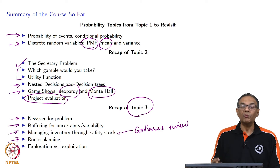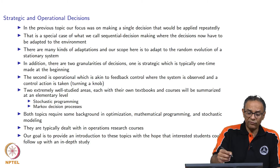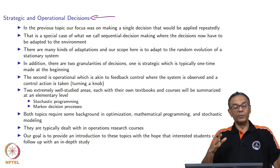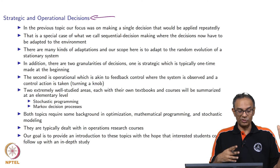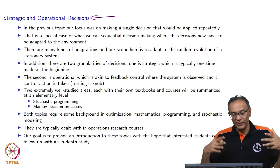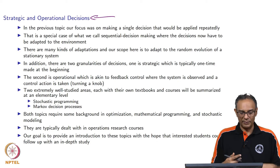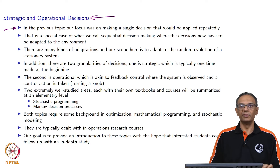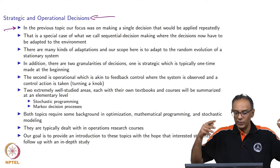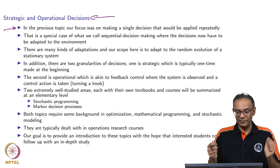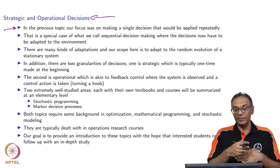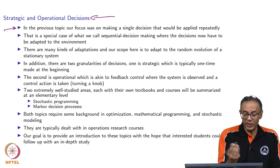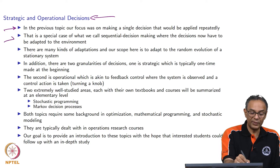Now let us move on to topic 4. Topic 4 essentially has two flavors. The first part will focus a little bit on strategic decisions, and then on operational-type decisions. We were earlier only looking at a single decision that you would keep repeating over time — that is also a special case of what we call sequential decisions.